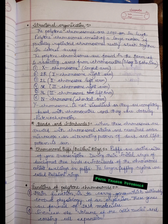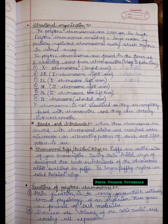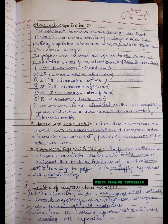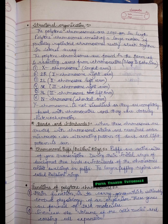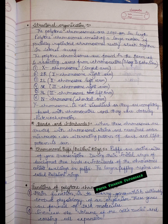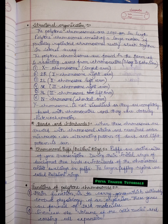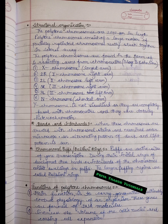If we talk about the bands and interbands present in polytene chromosomes: when these chromosomes are treated with chromosomal stains and examined under a microscope, an alternating pattern of dark and light bands is seen. This banding pattern is characteristic of polytene chromosomes.